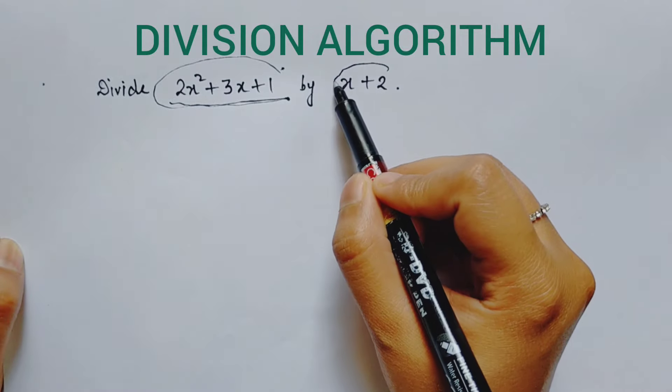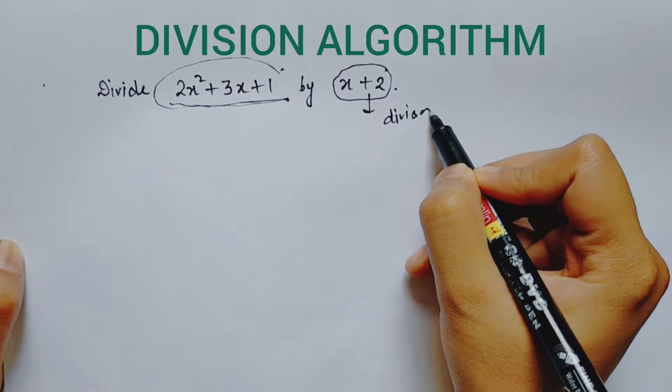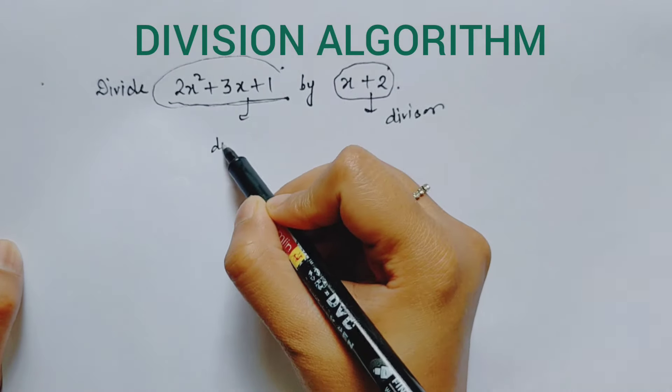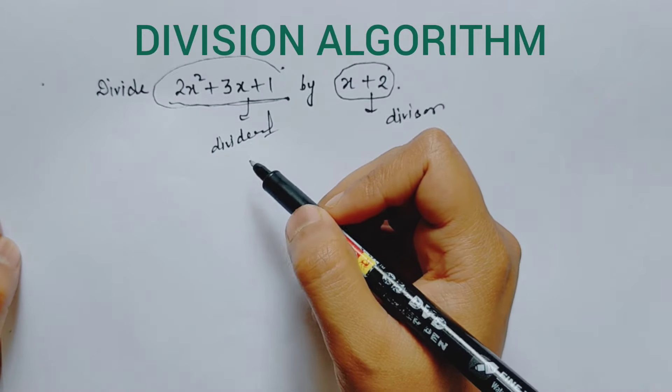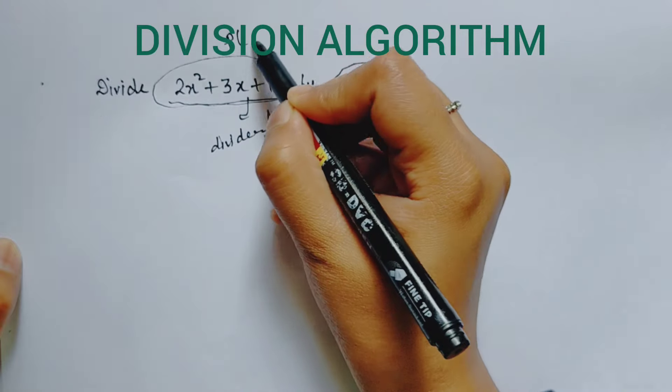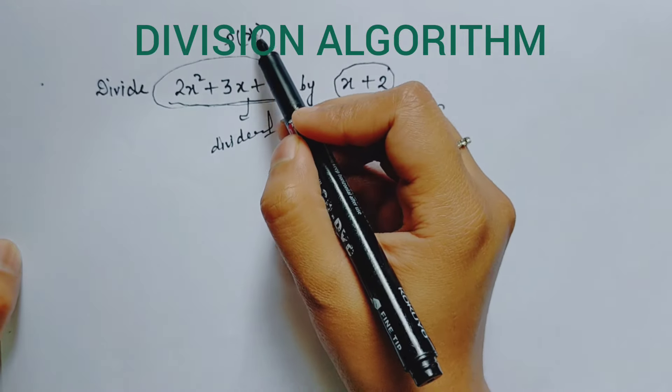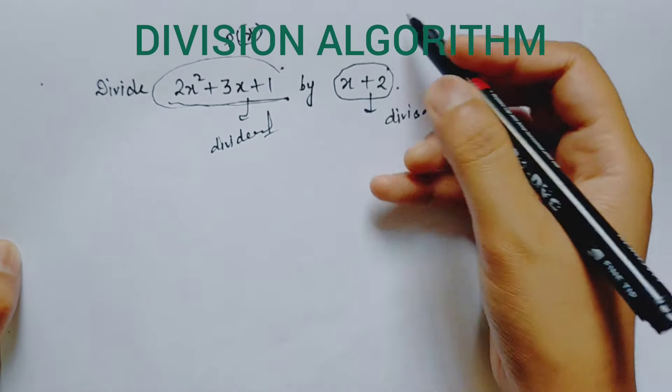Dividend means the polynomial you have to divide, and we have to divide by another polynomial x plus 2, which is the divisor. We generally call the dividend P(x), meaning it is a polynomial of variable x.